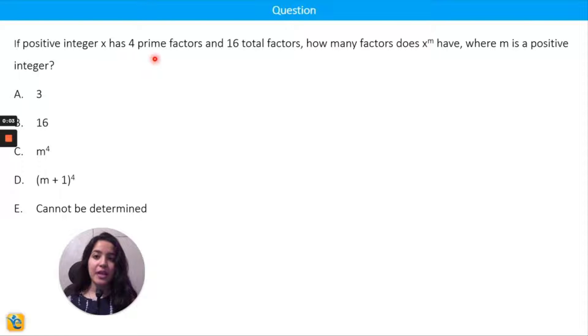A positive integer x has four prime factors and 16 total factors. So there's a difference between these four prime factors - these are just the prime factors, say a 2 or a 3 or a 5 or a 7. And 16 total factors - total factors include the prime factors as well as 1, the number itself, or any other composite factor that your number might have.